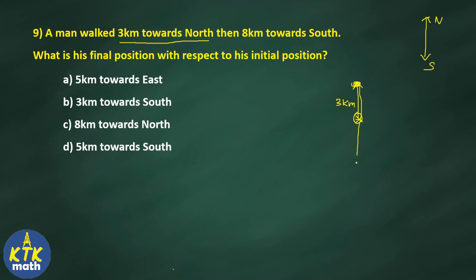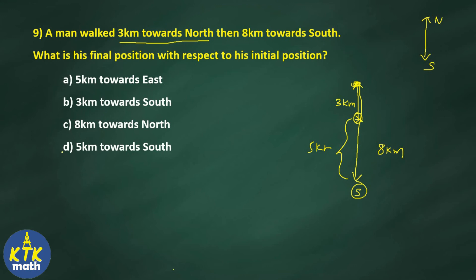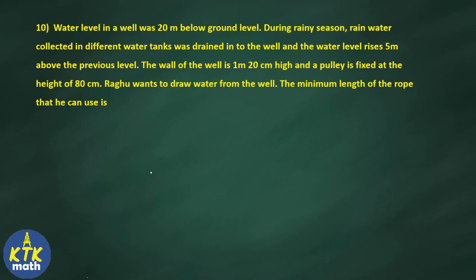Then from that position he moves 8 kilometers towards south — the exact opposite direction. The difference from his initial position to his ending position is 8 minus 3 equals 5 kilometers, and since he traveled more in the south direction, his final position is 5 kilometers towards south. Option D is the correct answer for question number 9.